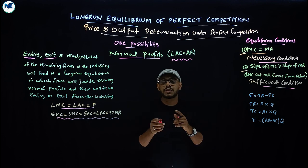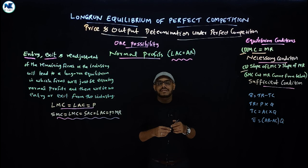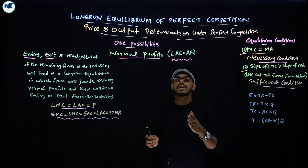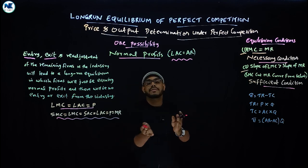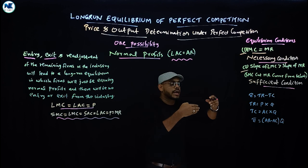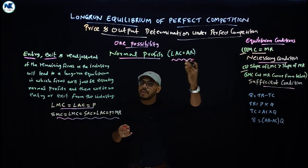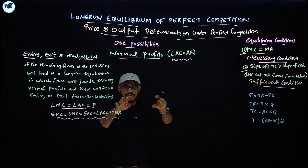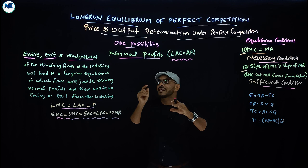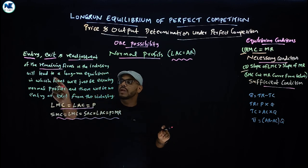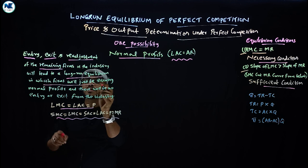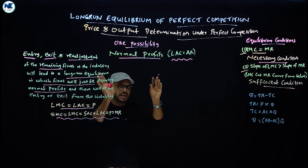Second, exit of existing firms: when firms are making losses, some exit the industry. Third, readjustment: firms remaining in the industry readjust their output level. This combination of entry, exit, and readjustment leads the industry to a long-run equilibrium in which firms are just earning normal profits. That is the key point.